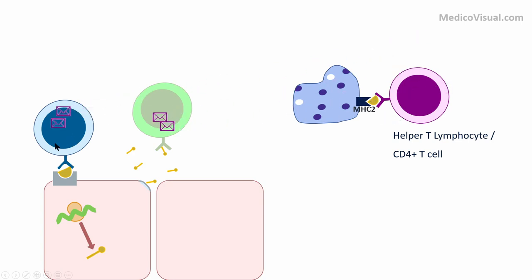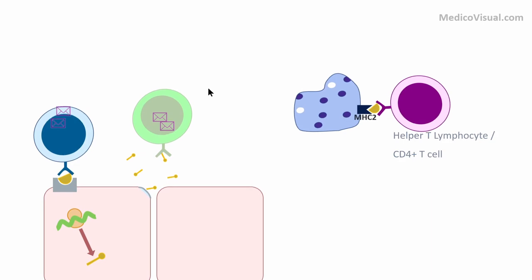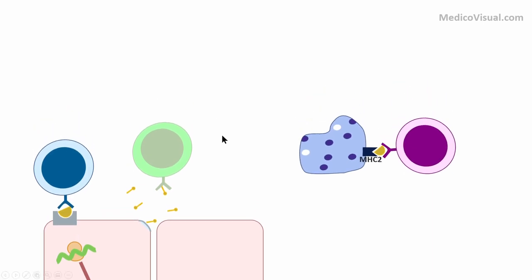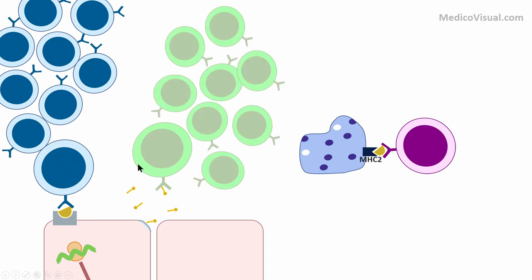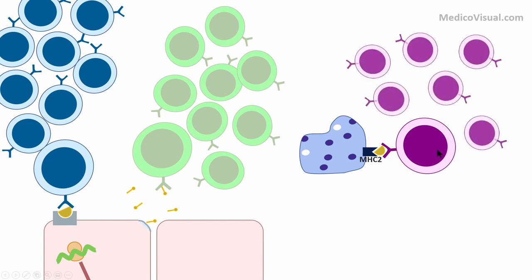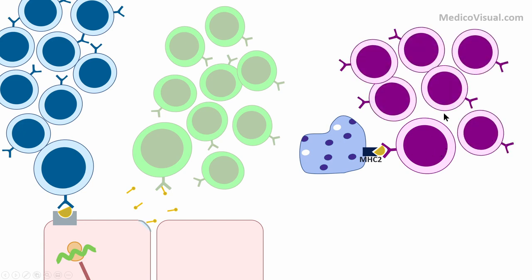These cytokines will activate and cause growth and proliferation — called clonal proliferation — of the specific cytotoxic T cells as well as B lymphocytes. Many copies of the specific cytotoxic T cells, specific B lymphocytes, and specific helper T lymphocytes will be formed.